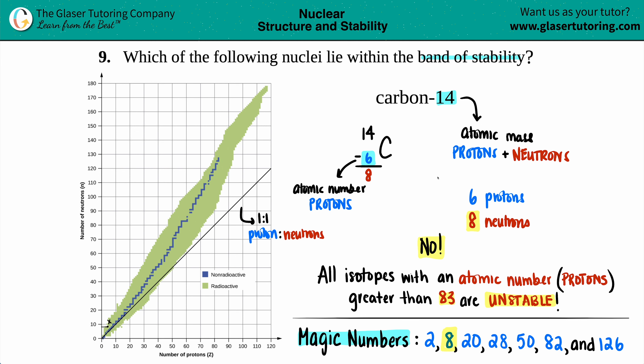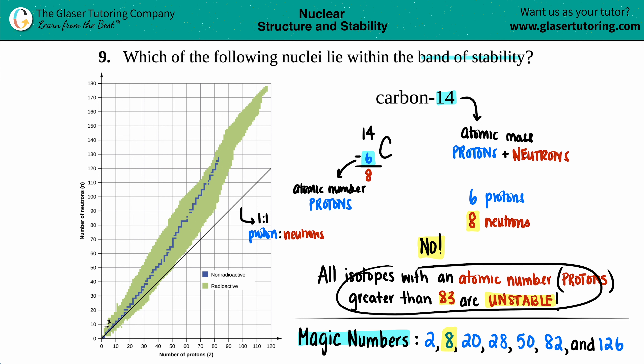So carbon-14 is one of the exceptions — even though we have a magic number, it is not a stable isotope. Just know your exceptions: carbon-14 is the exception to the rule down here in the lower region of the chart. We will see carbon-14 a lot more with the math in nuclear chemistry, but this is not a stable isotope. I hope this helped — thank you so much for watching!